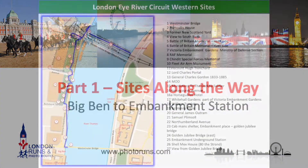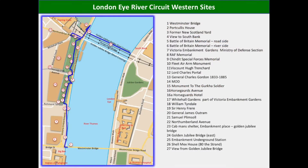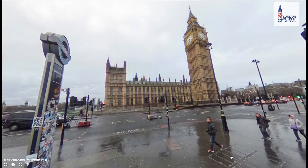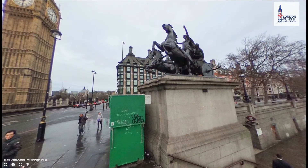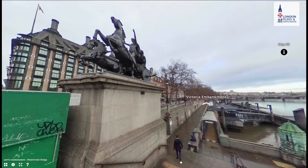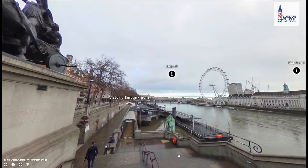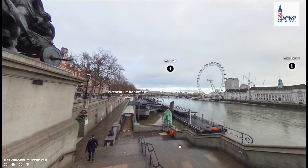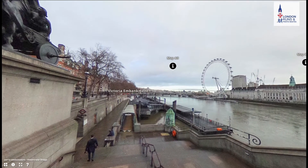Here are some of the sites you'd see along the route between Big Ben and Embankment Station. This map shows general sites along the way. To help you navigate, there's a 360° picture — we're just outside Big Ben, starting the route with the London Eye on our right-hand side, going down Victoria Embankment.